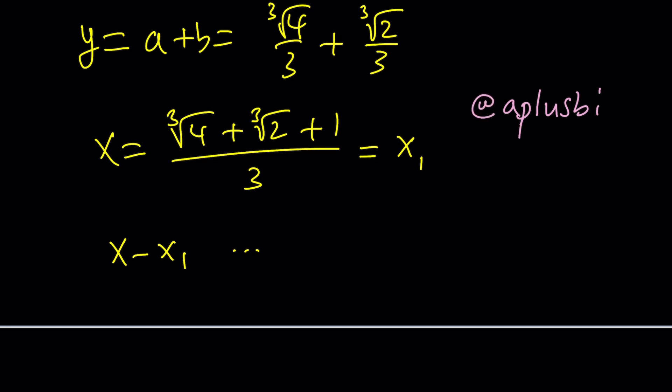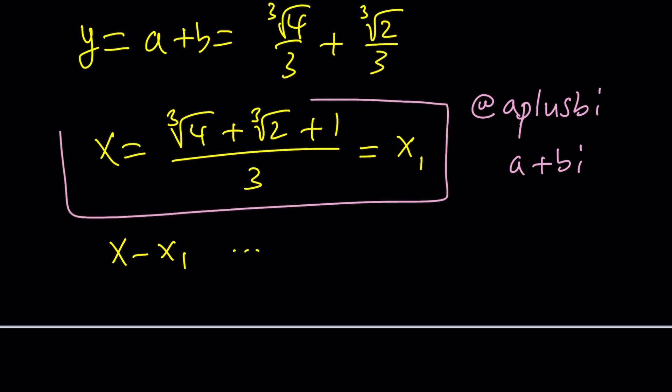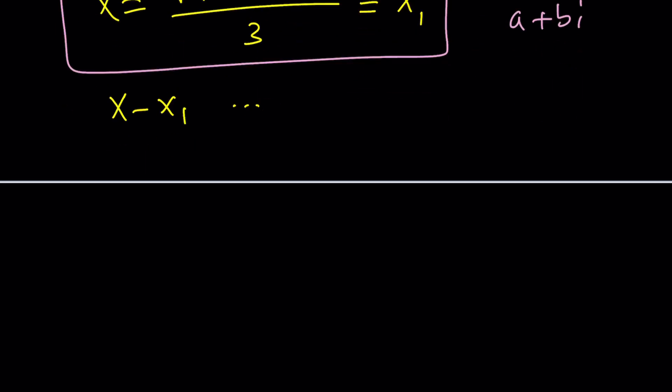That other channel is called a plus bi. It'll help you remember, because a plus bi is always a complex number. Anyway, that brings us to the end of the first method.